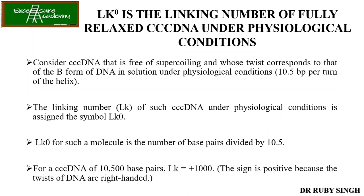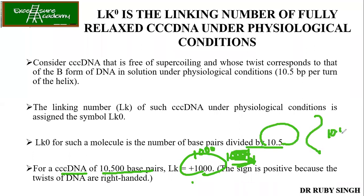Under physiological conditions — no high ionic concentration, no extreme temperature, only normal body requirements — the linking number equals LK₀, which means there is no writhe present. For example, if a CCC DNA has a certain number of base pairs, you divide by 10.5 to get the linking number. Note: some textbooks use 10 base pairs per turn, others use 10.5. The correct value is 10.5.